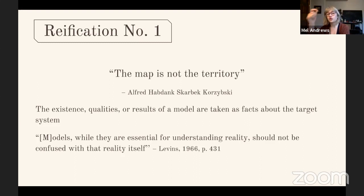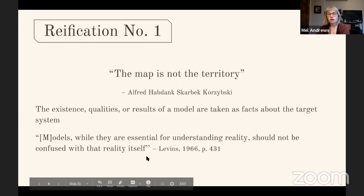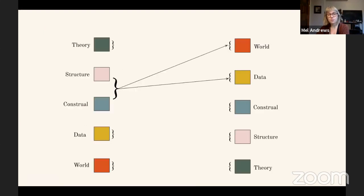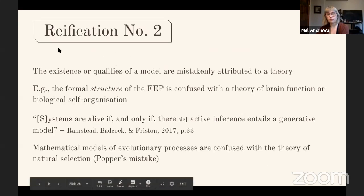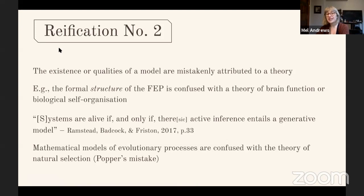Levins tells us that models, while essential for understanding reality, should not be confused with that reality itself. The second-order type of reification is when the existence or qualities of a model are mistakenly attributed to a theory. This has happened a lot with the free energy principle, where the formal structure of the FEP — that is, the math — is conflated with a theory of brain function or biological self-organization.